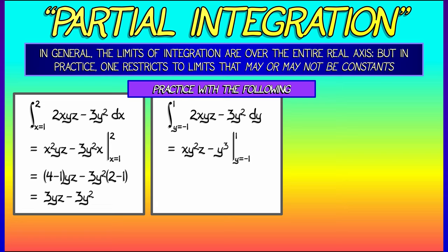We evaluate this as y goes from negative 1 to positive 1. That gives us (1 minus 1) times xz minus (1 minus negative 1), which after a little bit of simplification gives us a numerical answer of 2.